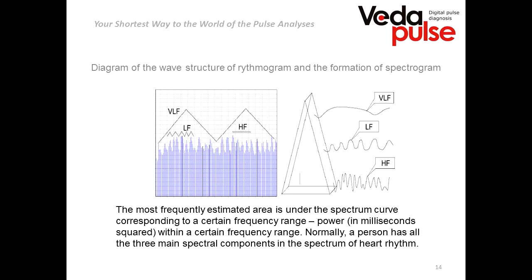When we use Fourier transform, we divide our curve into several curves, each correlating to a particular frequency range. During a 5-minute ECG recording we get a proper quantity of RR intervals to analyze, and we can see three main peaks depending on their frequency: high frequency, low frequency, and very low frequency. When we summarize all of them, we get exactly the curve we are used to seeing in the software.